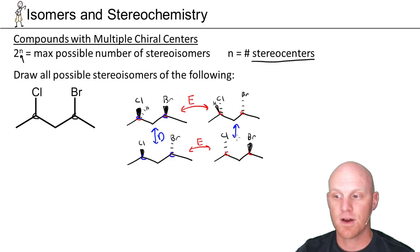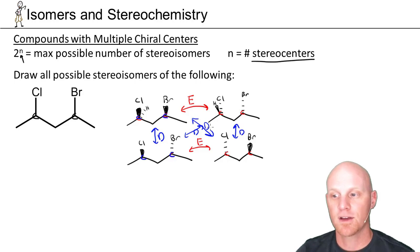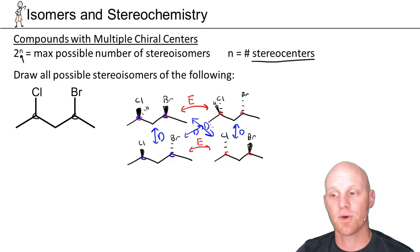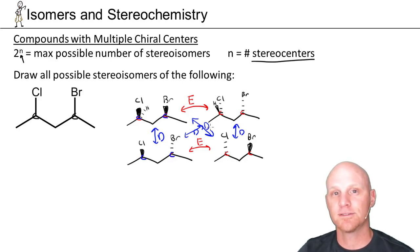Same thing with this comparison — these are diastereomers. Same with both of the diagonal comparisons: one chiral center the same, one different — diastereomers. This is kind of how it works. Let's look at a little bit of a tricky example on the next slide.